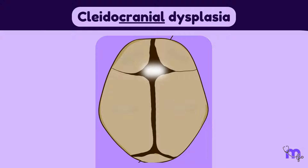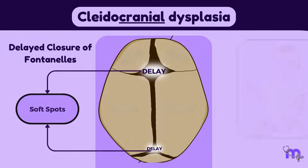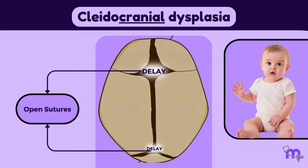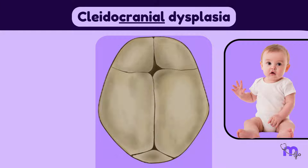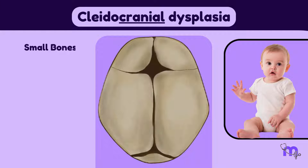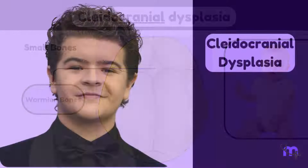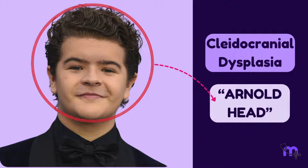The skull is also affected by delayed closure of fontanels, which are the soft spots on a baby's skull, and open sutures, which are the junctions between the bones of the skull. These sutures may close with the presence of additional small bones called wormian bones. As a result, the shape of the skull becomes more spherical, giving it a characteristic appearance referred to as the Arnold head.